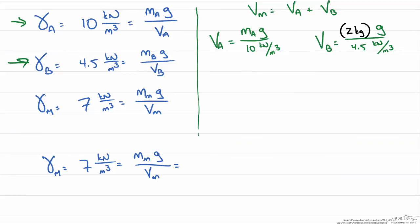So for the mass of the mixture we have the mass of A plus the mass of B which we know to be 2 kg times the acceleration due to gravity and then we can plug in the volume of A plus that for B.